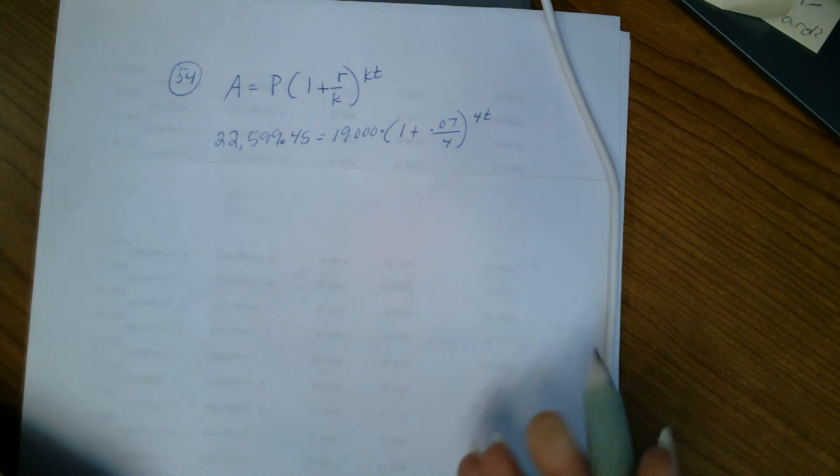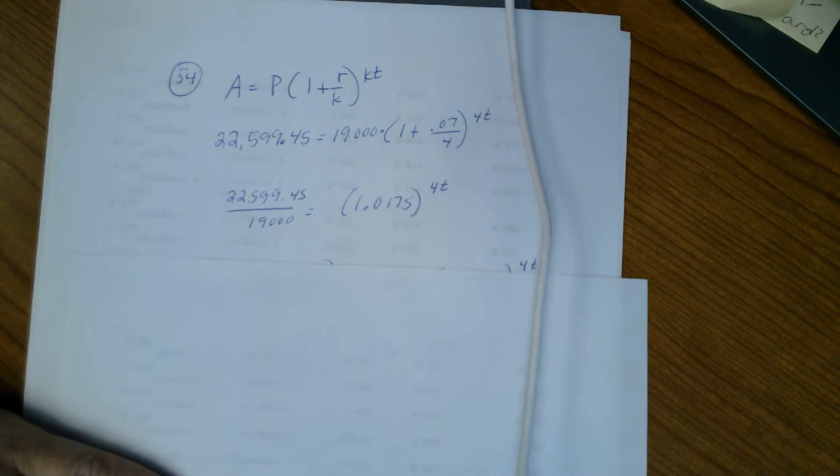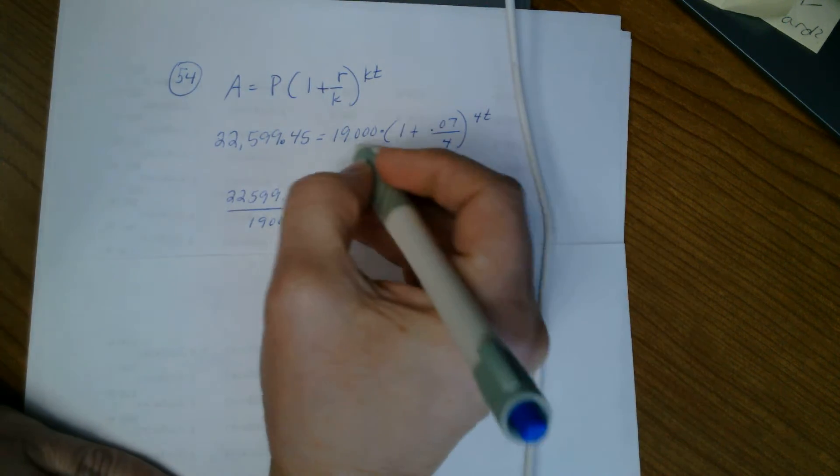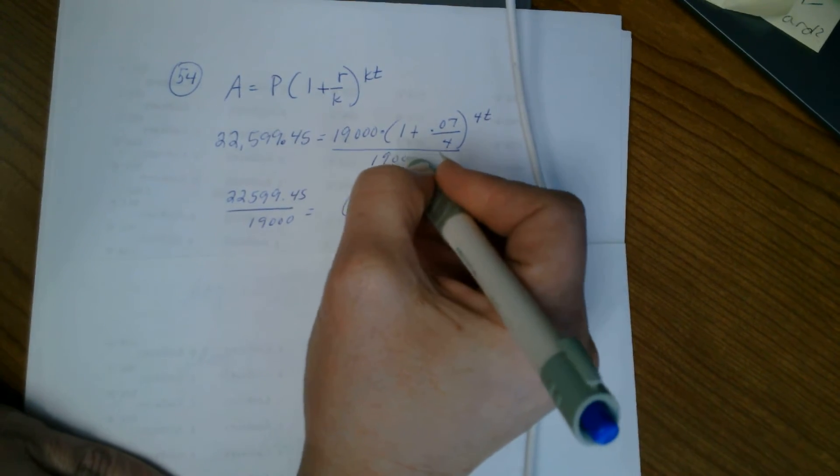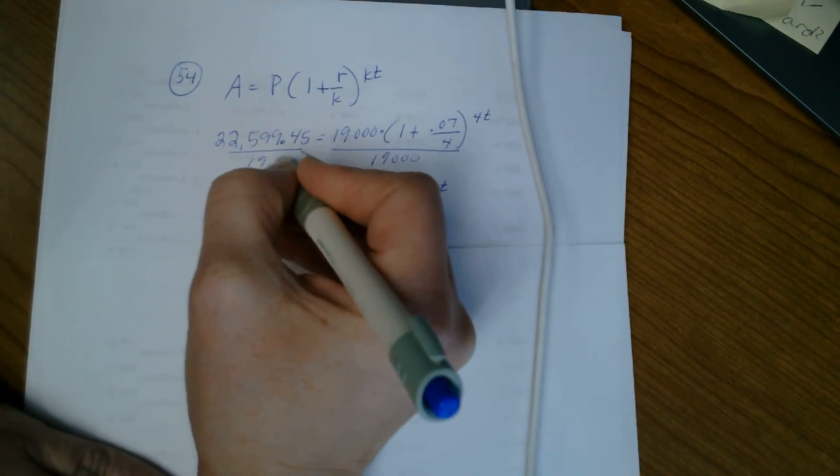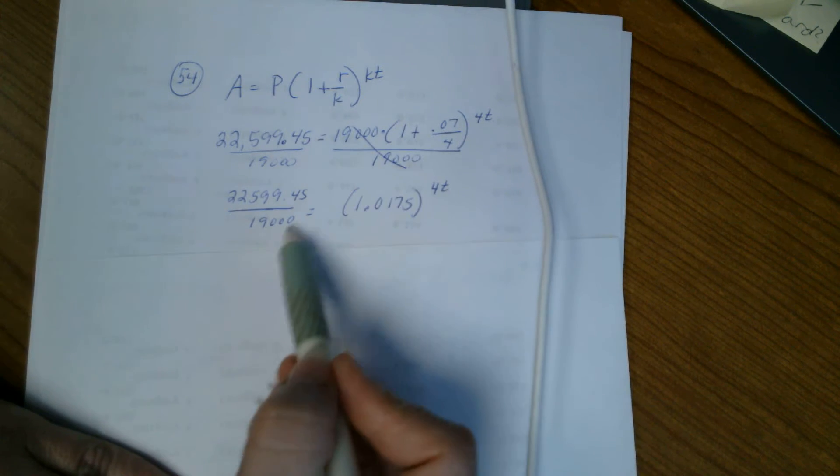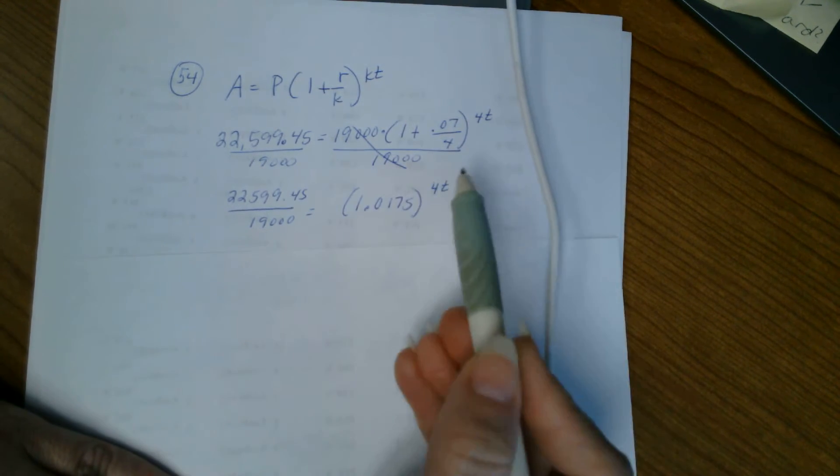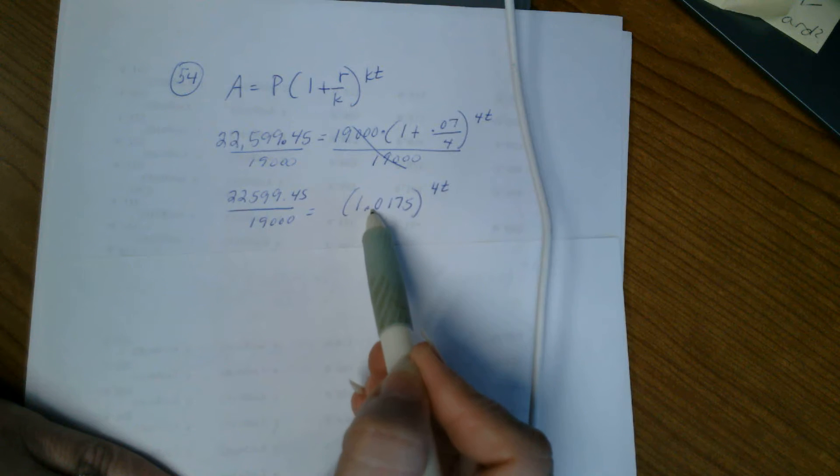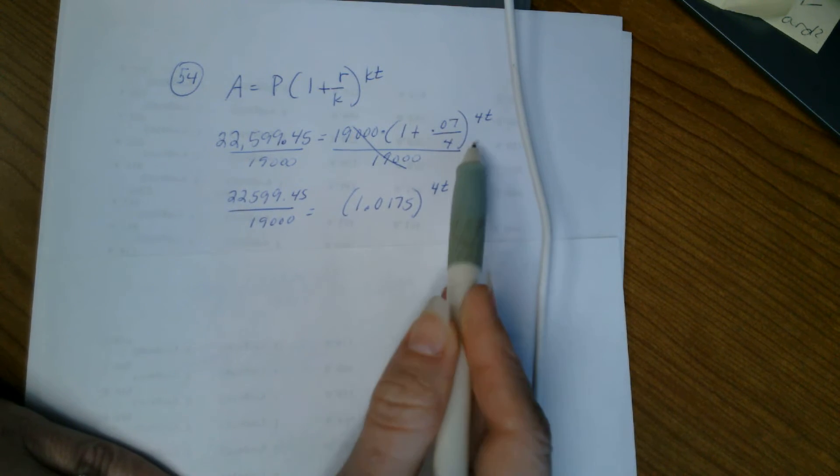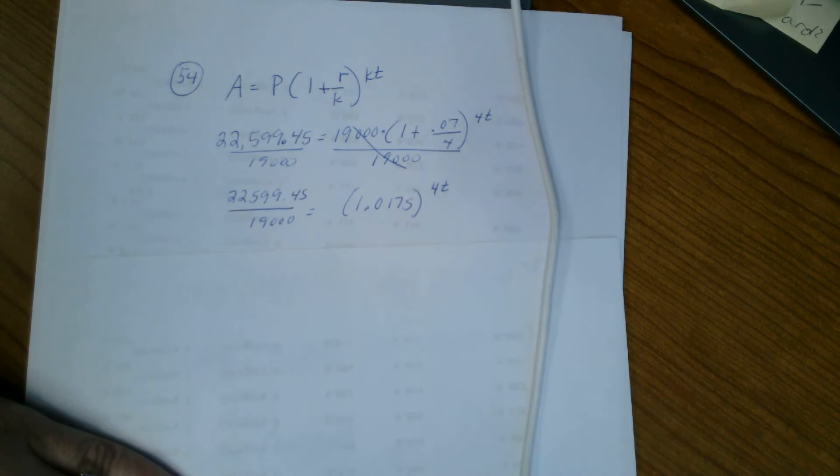So that's what I've done here. I would divide by 19,000, divide by 19,000 to cancel that part off of the equation, bringing the 19,000 over to the other side and leaving this simplified as 1.0175 raised to the 4t.